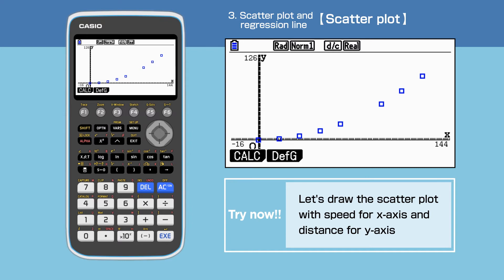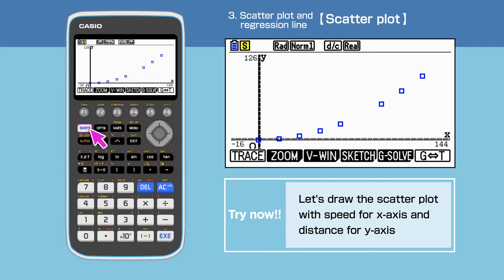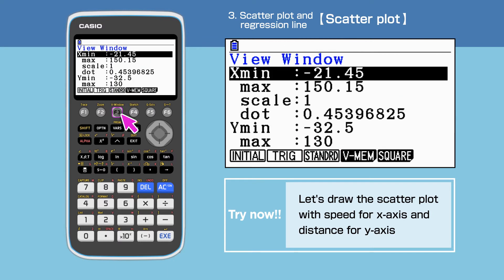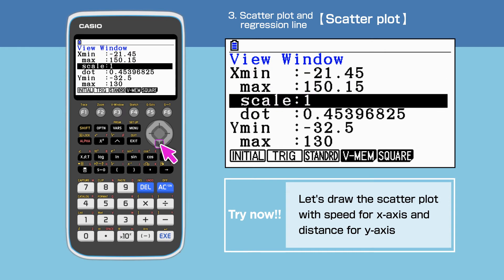We have drawn the scatter graph. It is possible to change the scale of the X and Y axes. To do this, press Shift, then F3, View window, and change the scale to 20 for both the X and Y axes.